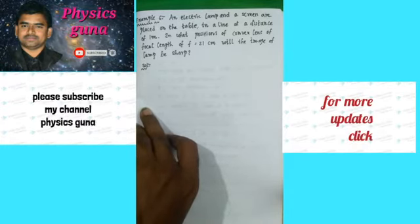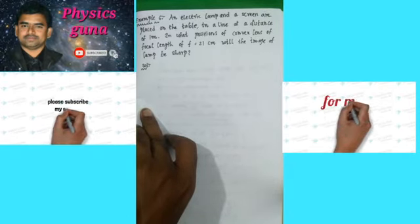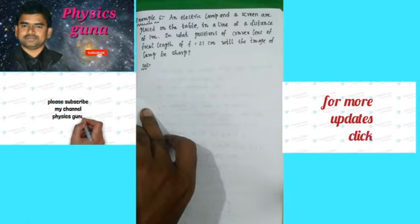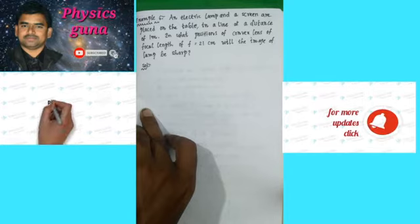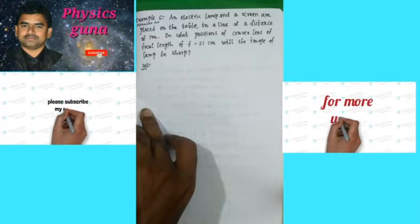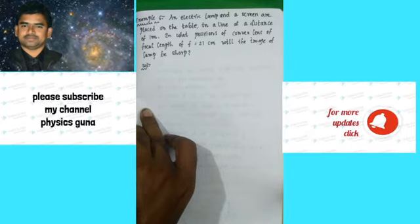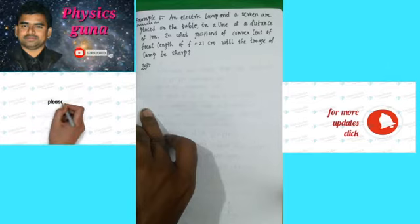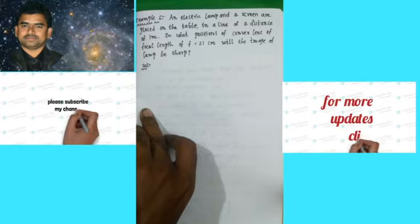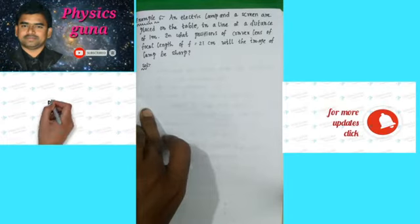In Example 6, the data given is: an electric lamp and a screen are placed on a table in a line at a distance of 1 meter — that is the distance between the lamp and the screen. The focal length of the convex lens is given as f equals 21 cm. What is asked is: in what position of the convex lens will we get a sharp image of the lamp?